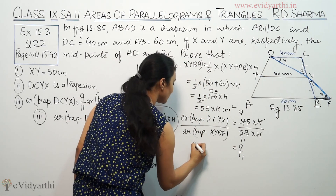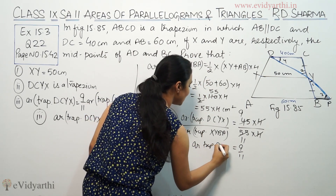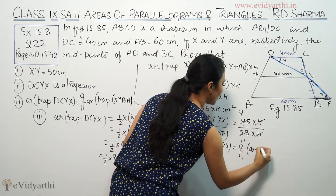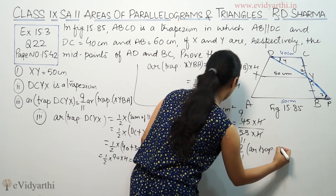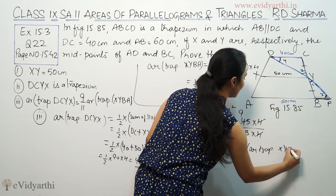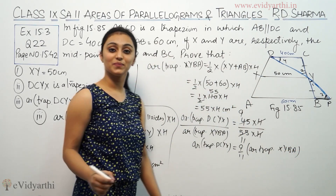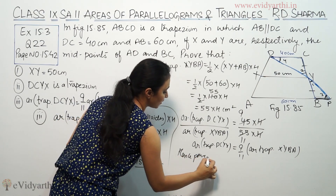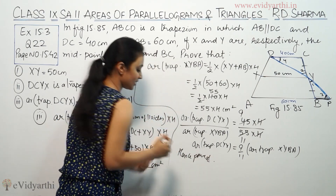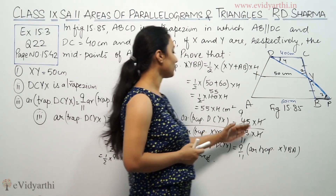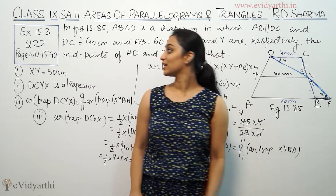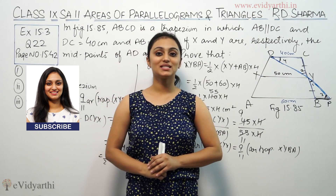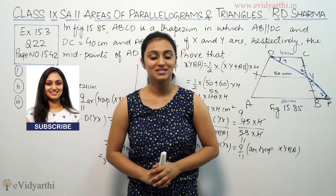So the area of trapezium DCYX upon area of trapezium XYBA equals 9 by 11. This was question 22 from R.D. Sharma. Stay tuned for the next video for more questions. Bye-bye.